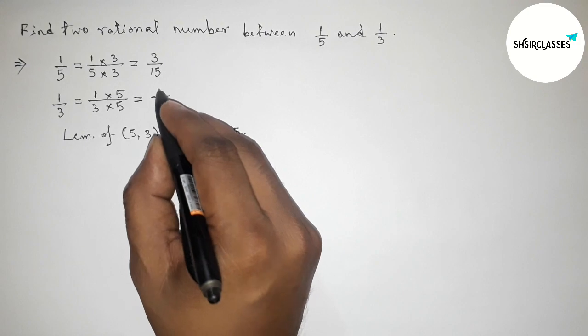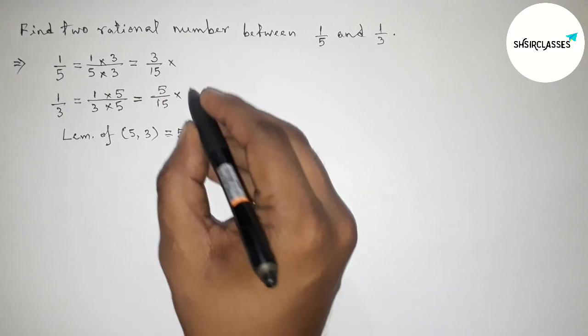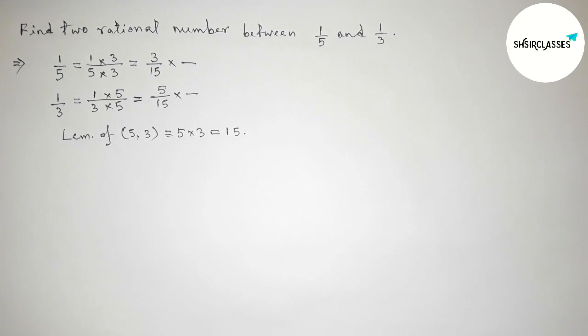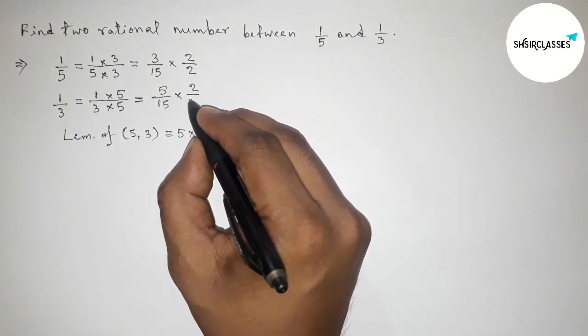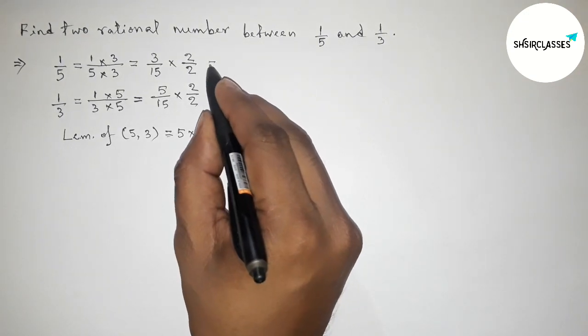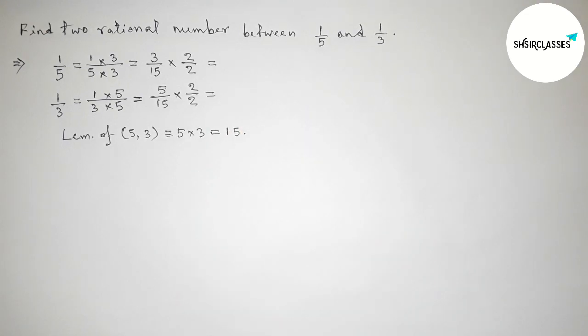Next, for two rational numbers between 1 by 5 and 1 by 3, we have to again multiply these two rational numbers by a number up and down. Taking 2, multiply up and down by 2 for both fractions.